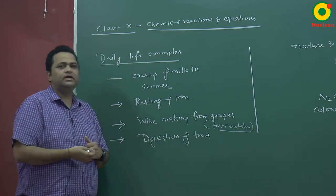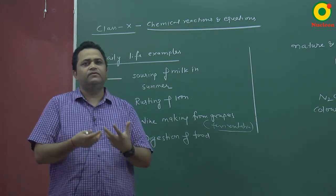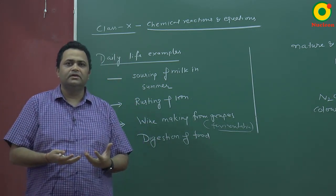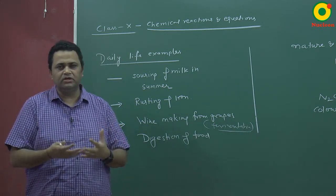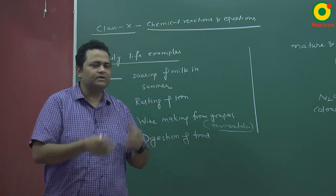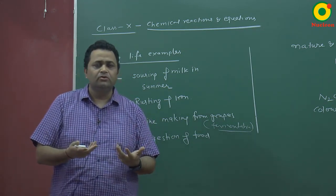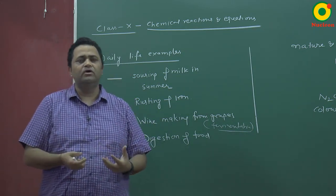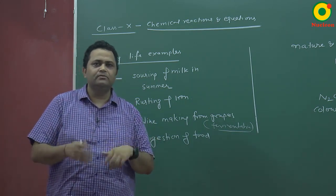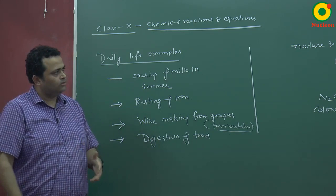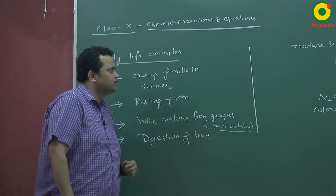Digestion of food is another example. What we eat is digested in the body. There are different enzymes and acids in the body. The long chain of food molecules is broken down and converted. Ultimately, glucose is broken down, changing into CO2 and water, and energy is produced. So in our environment, there are many chemical changes that we observe.